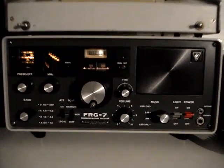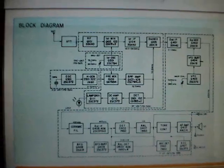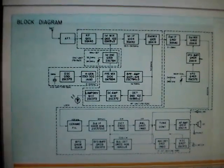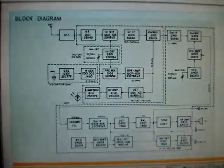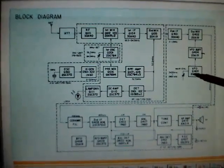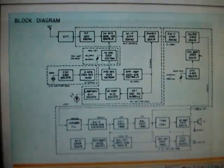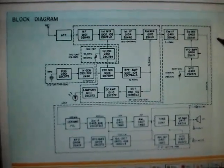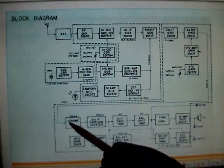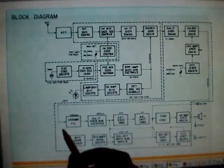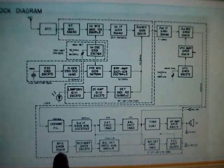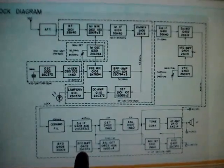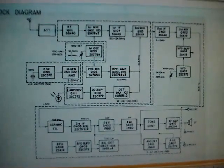So let's get started. The first thing we need to look at is the block diagram of the receiver. Here's the classic Wadley loop, and then there's a VFO, the main VFO of the receiver.